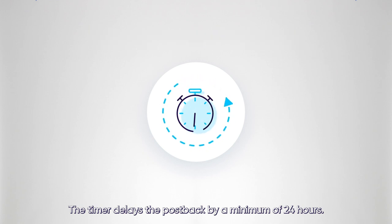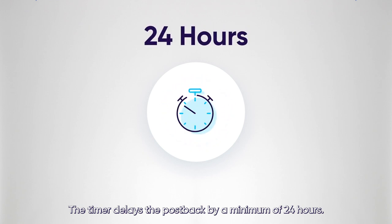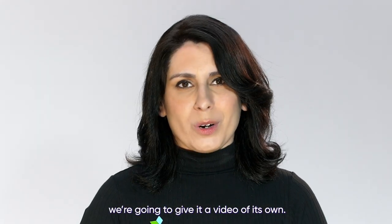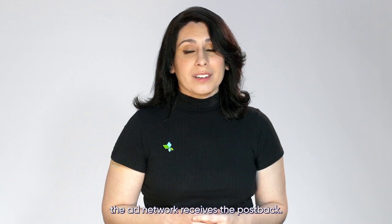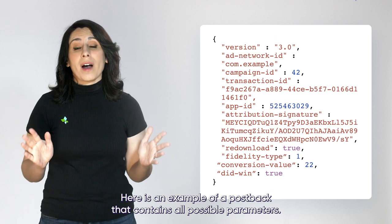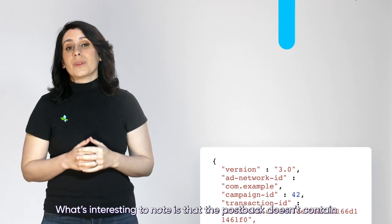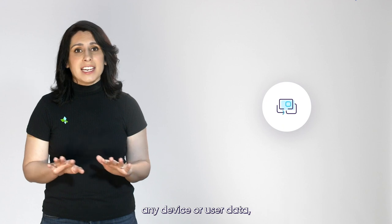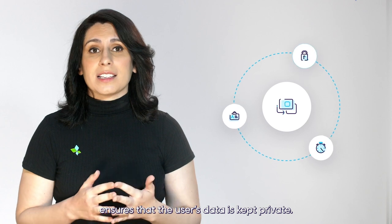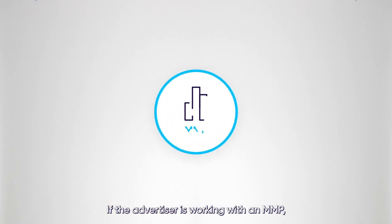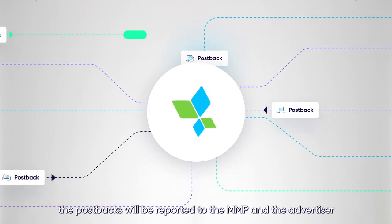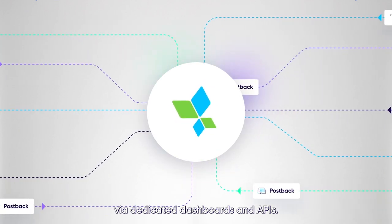The timer delays the postbacks by a minimum of 24 hours. Since the timer mechanism itself is quite complex, we're going to give that a video of its own. Once the timer runs out, the ad network receives the postback. Here is an example of a postback that contains all possible parameters. What's interesting to note is that the postback doesn't contain any device or user data, and together with the timer delay, this ensures that the user's data is kept private. If the advertiser is working with an MMP like AppsFlyer, the postbacks will be reported to the MMP and the advertiser via dedicated dashboards and APIs.